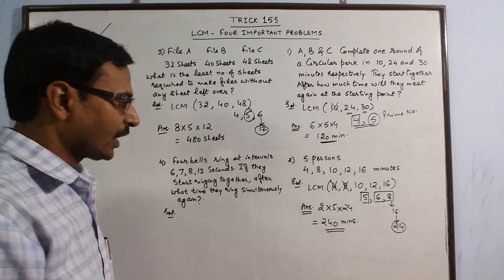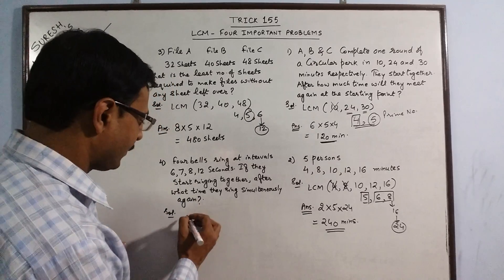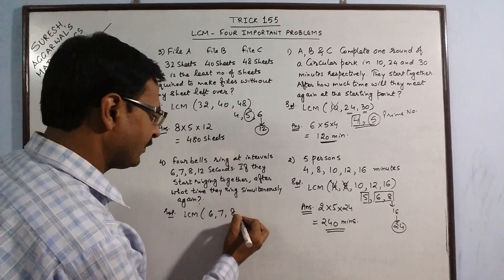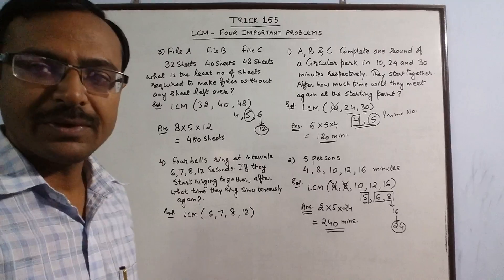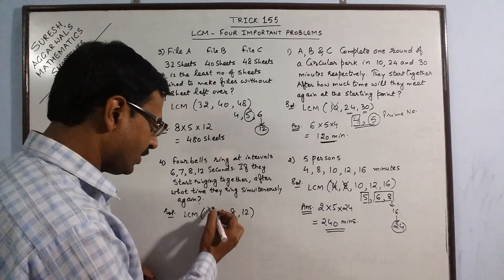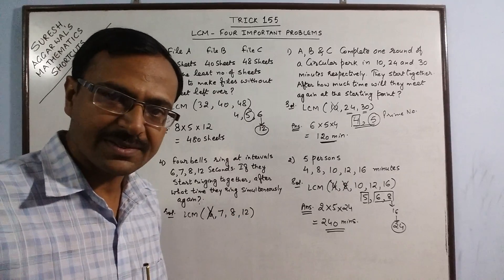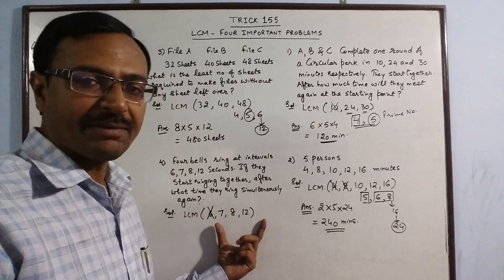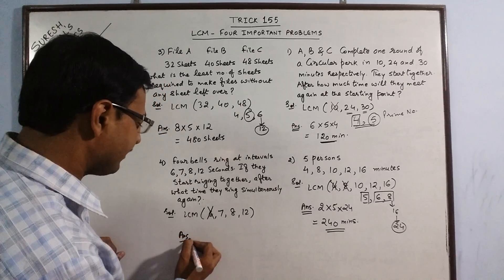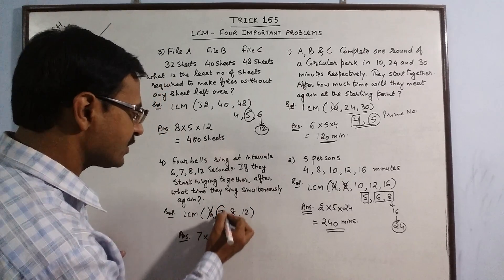We need to find the LCM of 6, 7, 8, and 12. Observe that 6 divides 12 exactly, so we need not consider this number 6. We are left behind with 7, 8, and 12. Our answer will have 7 as one of the factors because this is a prime number. What we are left behind is 8 and 12.